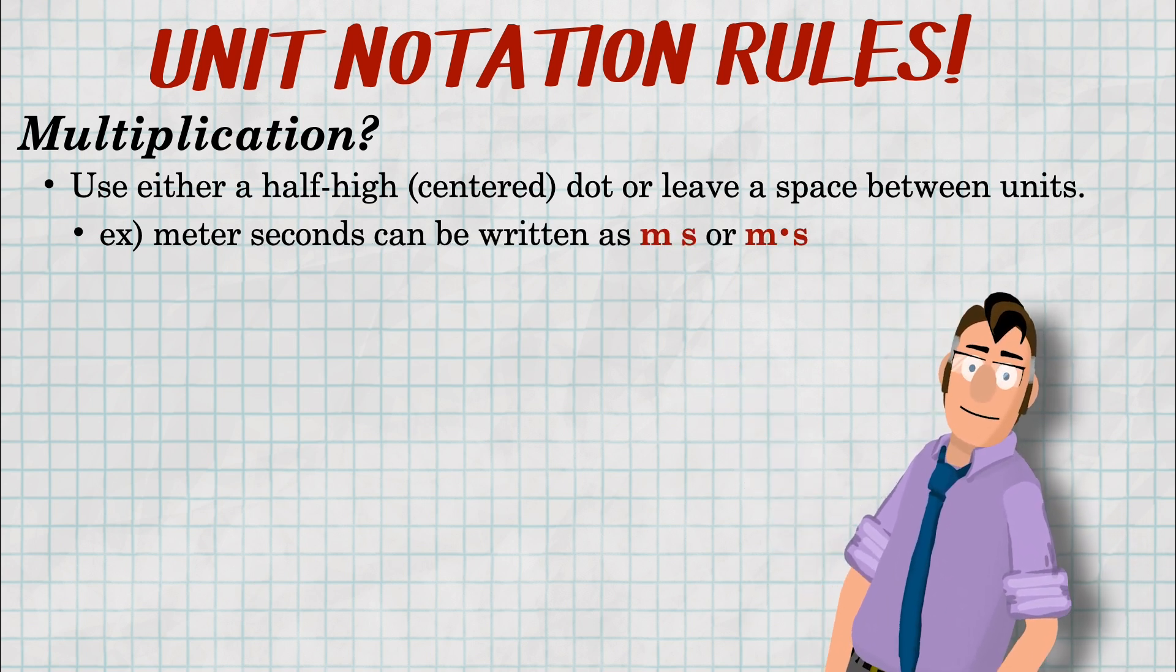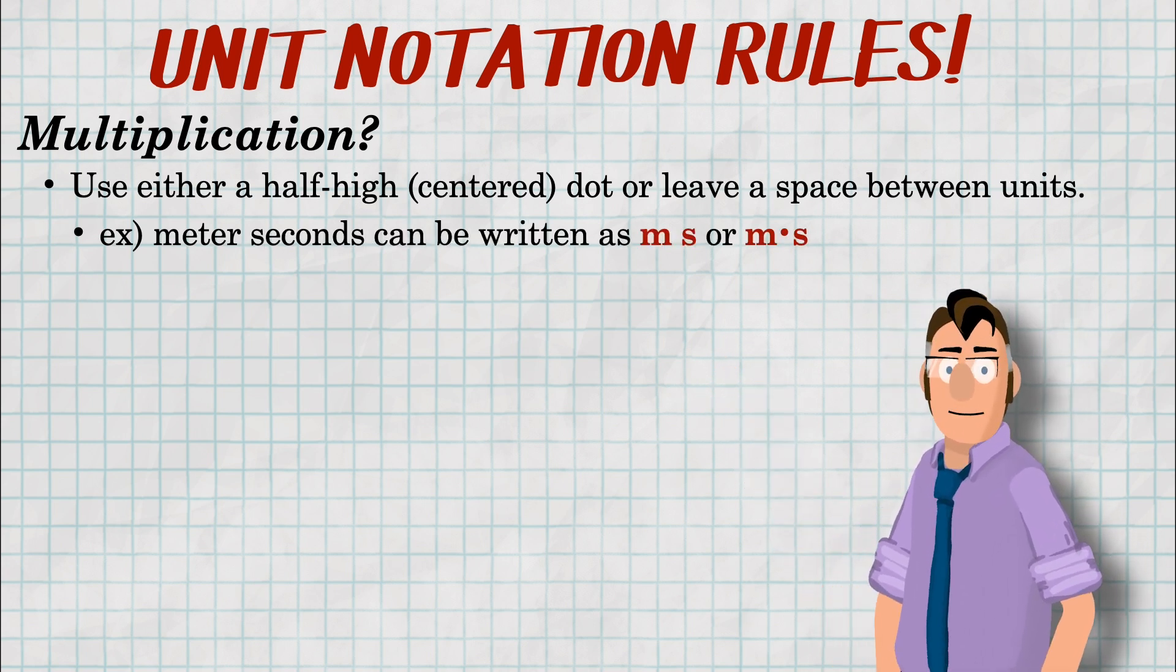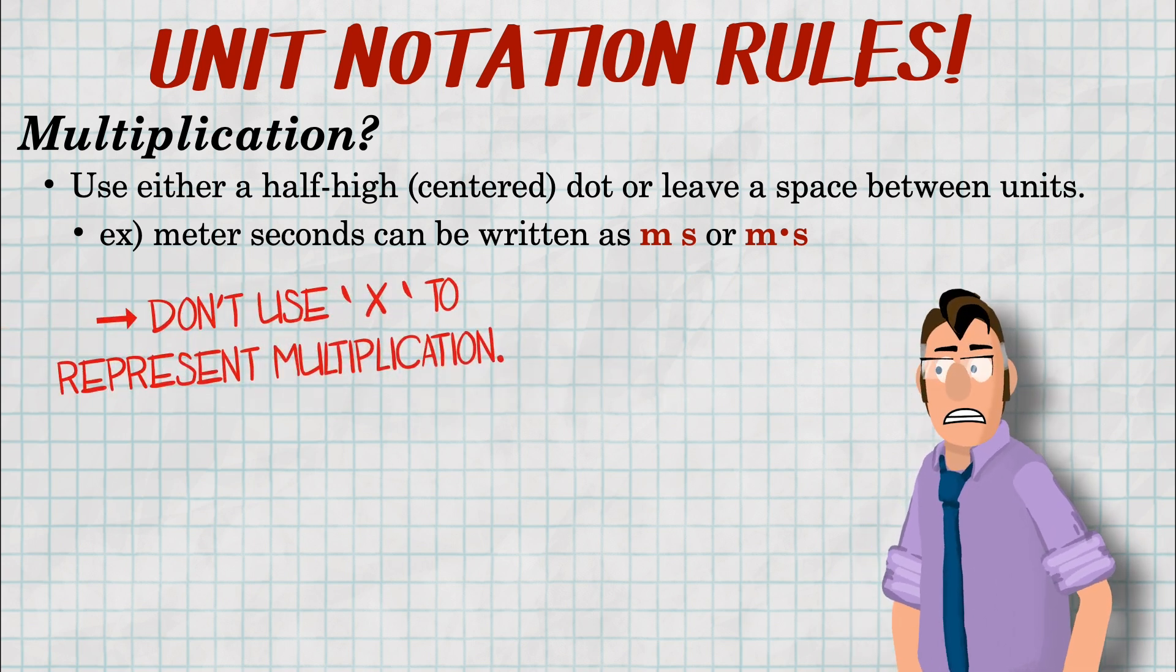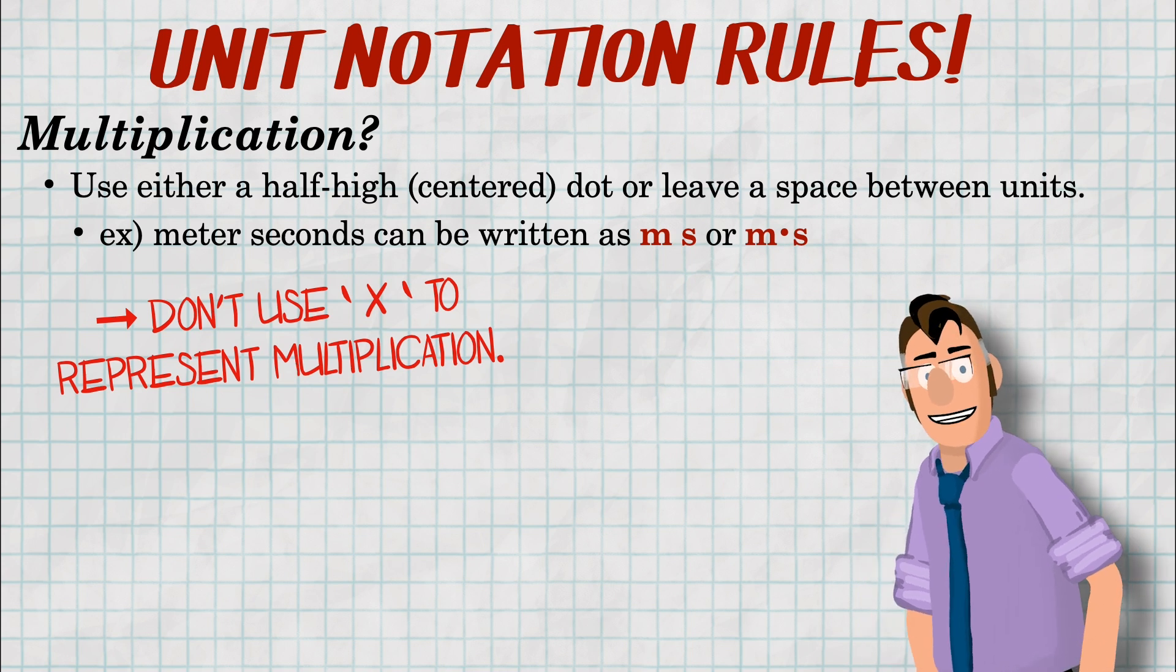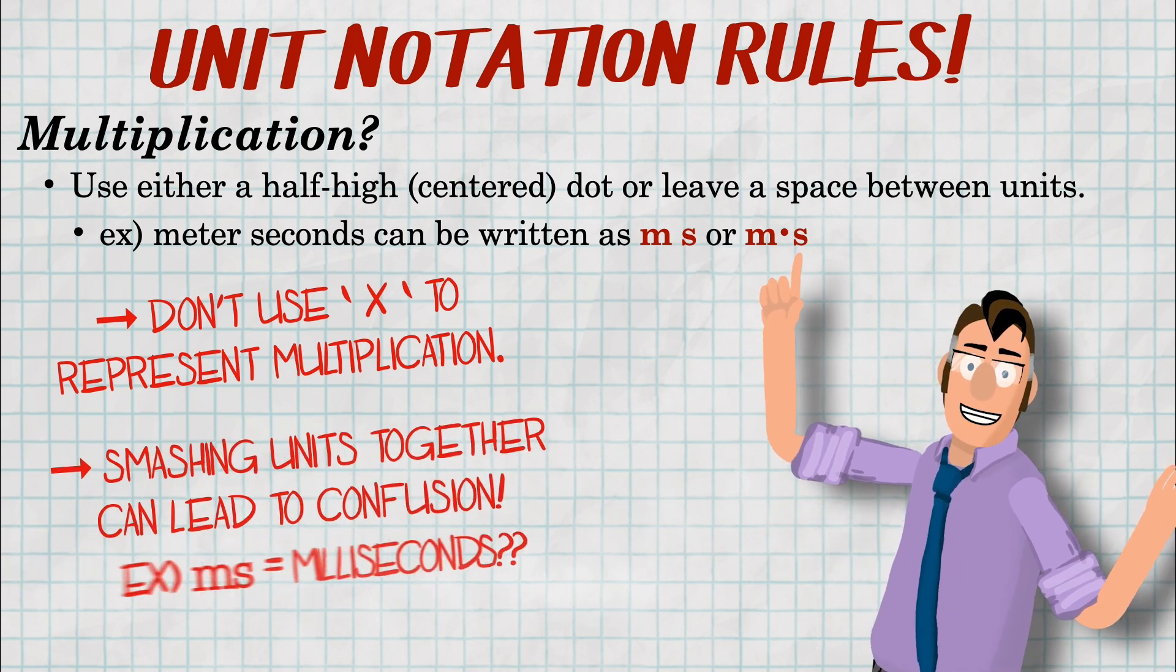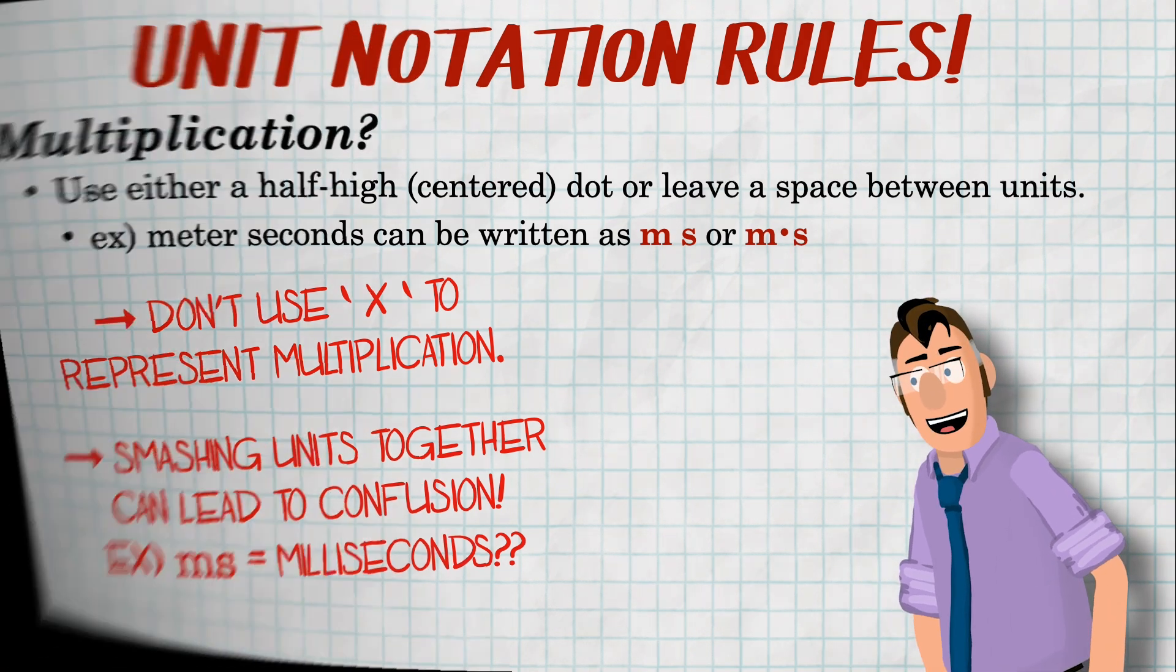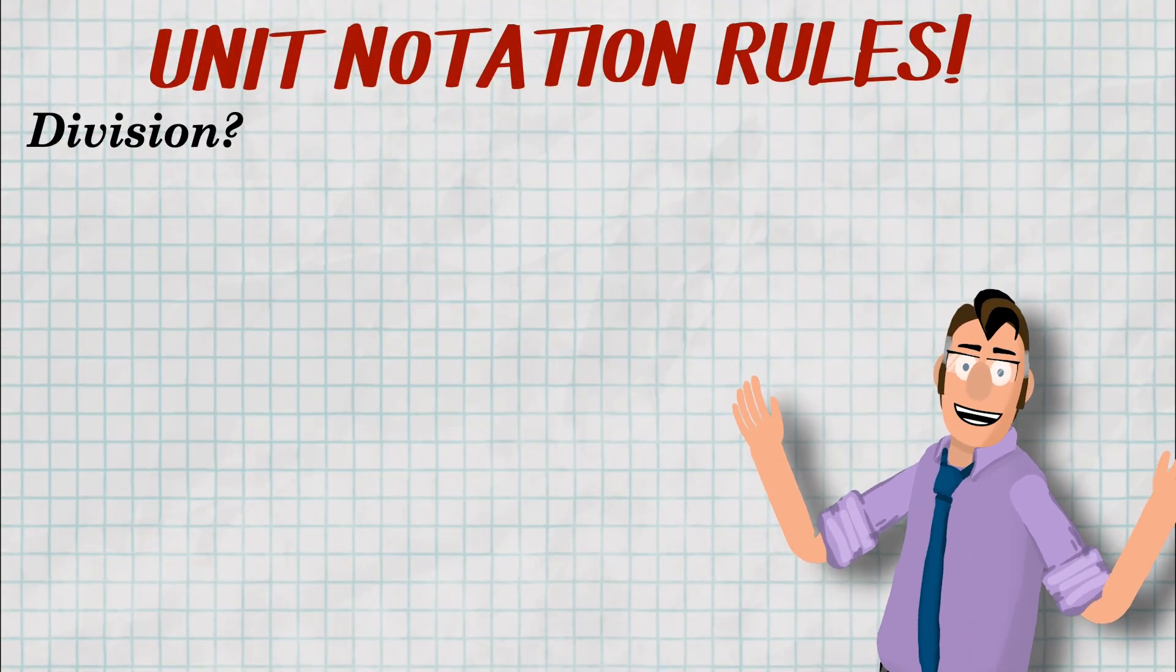For example, meter seconds should have that space between them or that half-high dot. You are not to use X for multiplication anymore for units. That's a big no-no. That might be confused as another unit. I would avoid using the space. If it looks like MS, that might be confused as milliseconds. In my opinion, half-high dots are great. Otherwise, look for the space between the units.